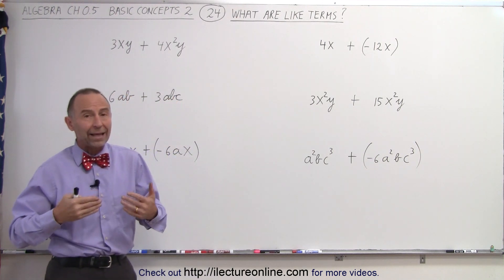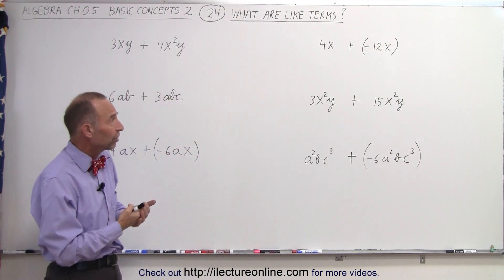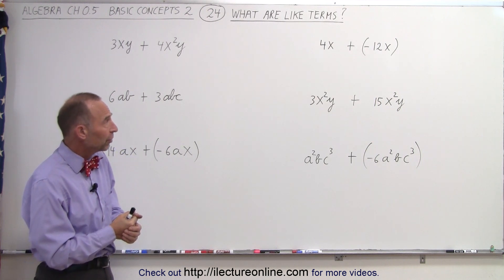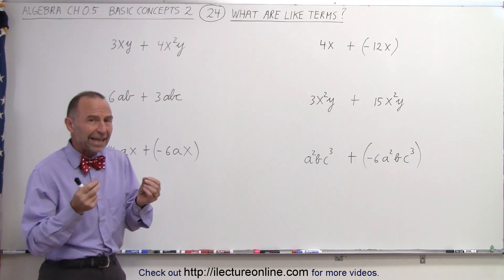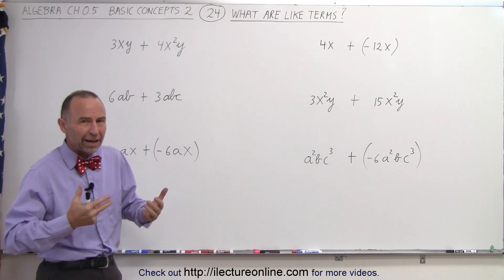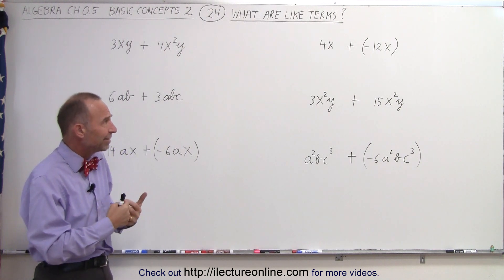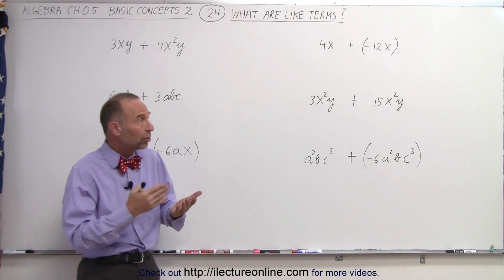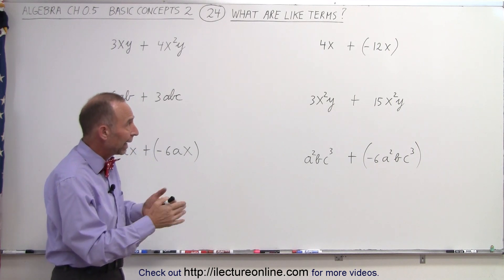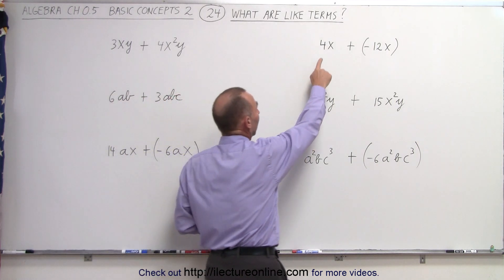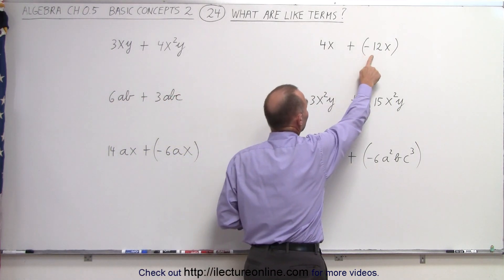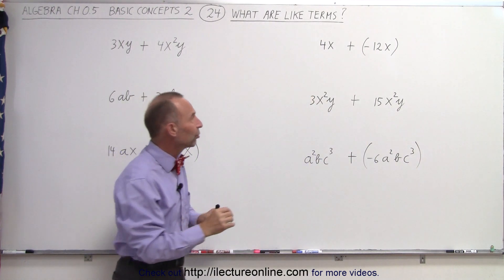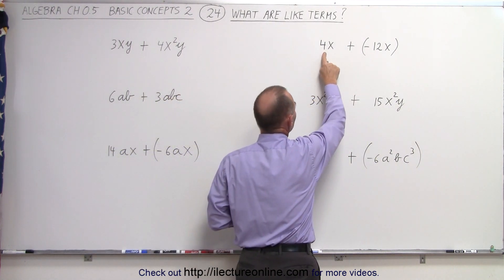Sometimes we're asked to add expressions together or subtract expressions from one another when the expressions contain letters like x, y, z, a, b, c. Now a, b, c and x, y, z typically represent constants or variables. And when we see something like 4x or minus 12x, we see that they're multiplied together, so therefore they're called factors.